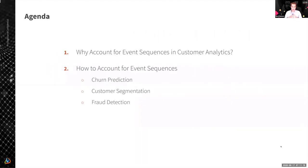The agenda for this talk is very simple. I'm going to cover just two topics. First: why do we need to account for event sequences in customer analytics? And second: how exactly we can implement this — how can we account for event sequences for different use cases and applications like churn prediction, customer segmentation, and fraud detection?